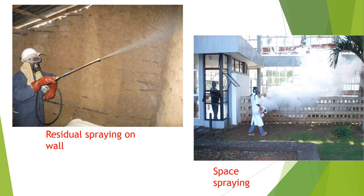The first picture shows residual spraying on the wall; here you can use DDT, lindane, or malathion, which have residual action up to six and three months respectively. Residual action also depends on the type of wall — whether it is a pakka wall or a kacha wall; if it is a kacha wall or made of mud, the residual action is less. The second picture shows space spraying, where you can use pyrethrum extract or malathion.